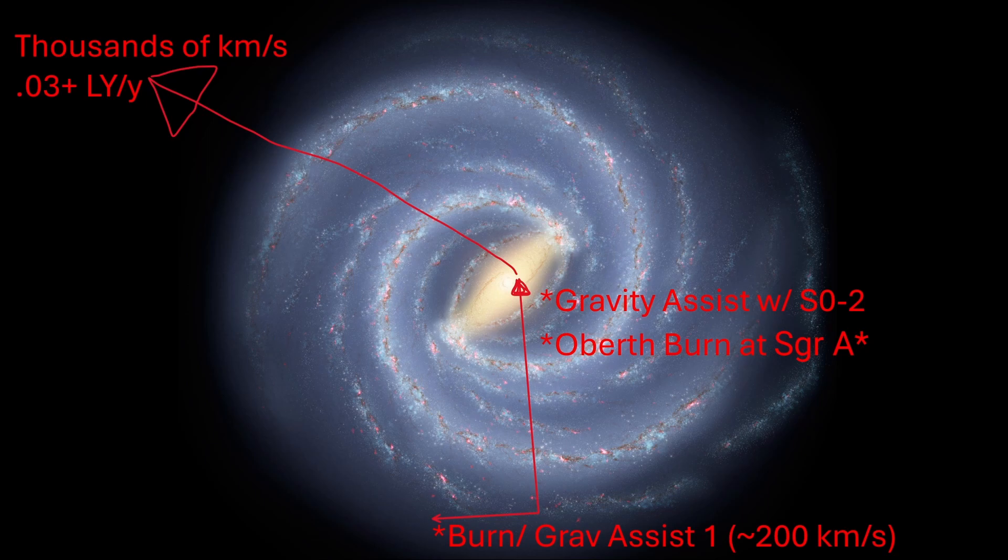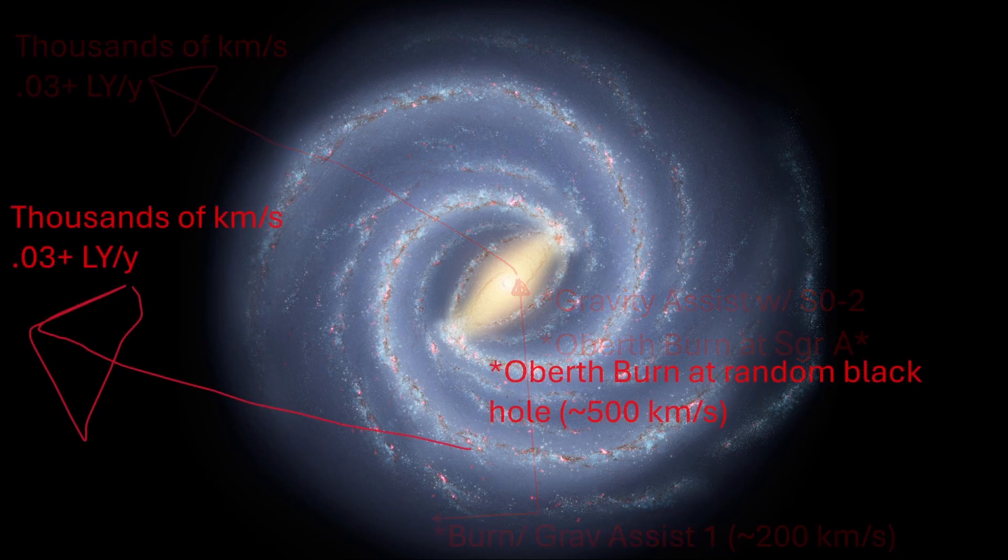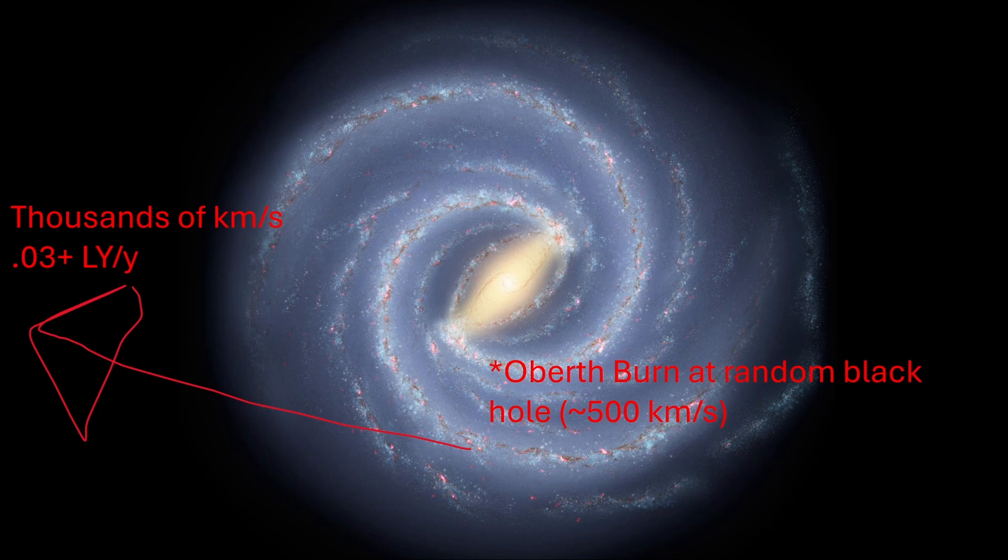And this is going to end up giving us thousands of kilometers per second in acceleration, and it's going to give us on the ballpark of 0.03, and it could be even more if we time everything perfectly and use tons of acceleration. Now we could also do this at a black hole, but in this case we likely wouldn't be able to get the same levels of acceleration, especially if there's no star orbiting the black hole that we use as a gravity assist. But this is an option if we're not super concerned with how fast we're going and we just want to leave. We could just do an Oberth burn at a black hole or even a star for that matter.